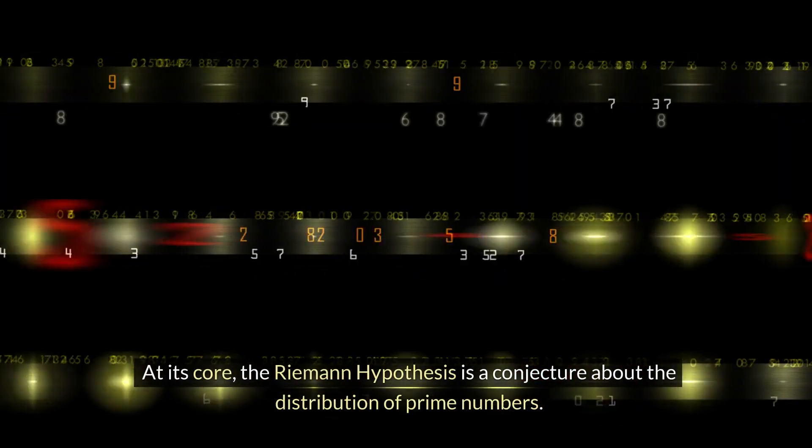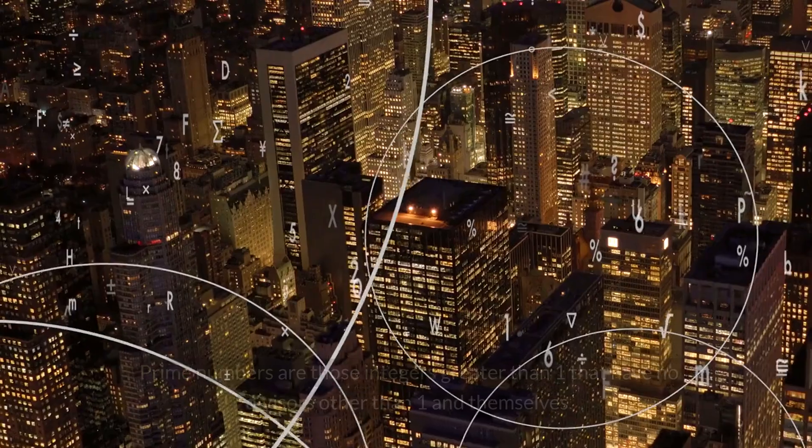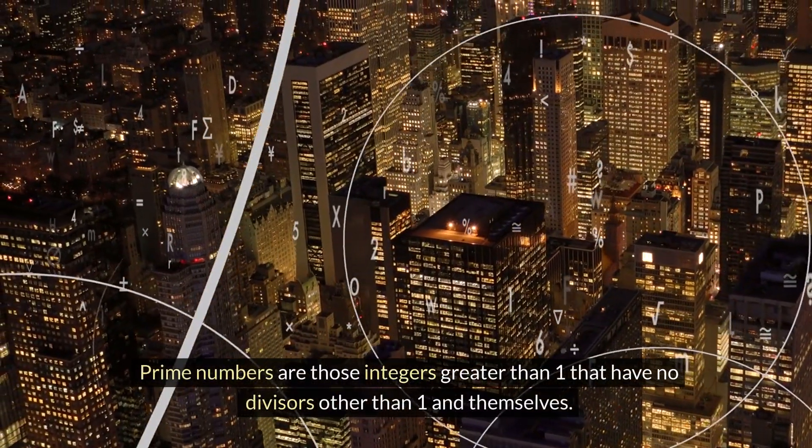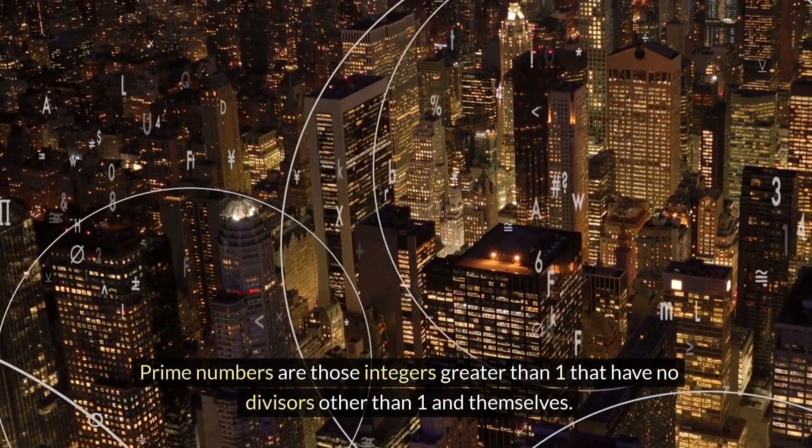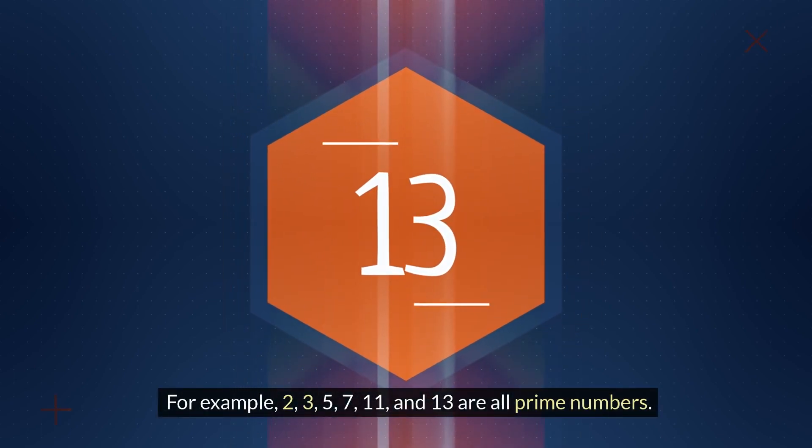At its core, the Riemann hypothesis is a conjecture about the distribution of prime numbers. Prime numbers are those integers greater than one that have no divisors other than one and themselves. For example, 2, 3, 5, 7, 11 and 13 are all prime numbers.